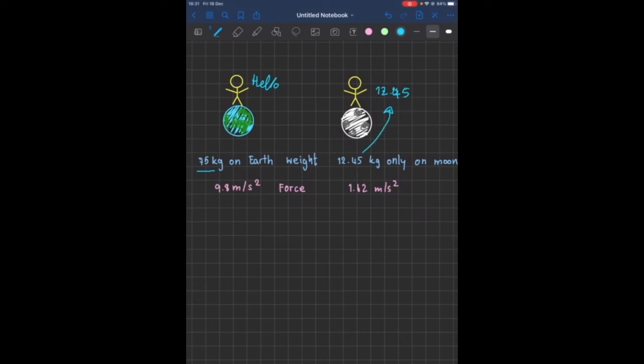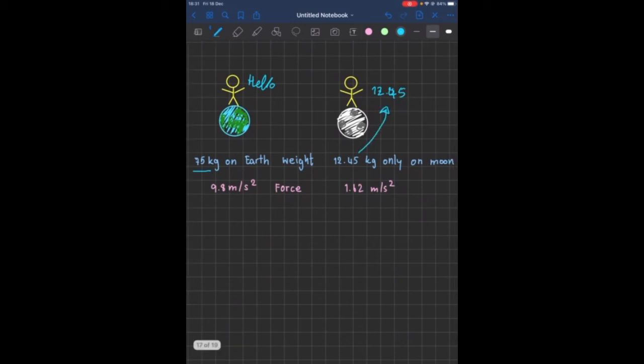So why does that happen? That's because the gravity or the force changes. On Earth we have the gravity of 9.8, while at the moon the gravity is 1.62. So that is why his weight would change.